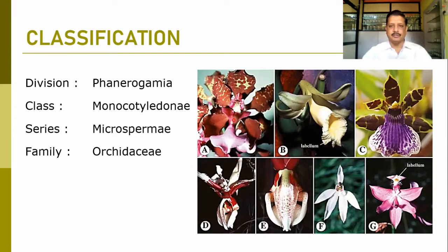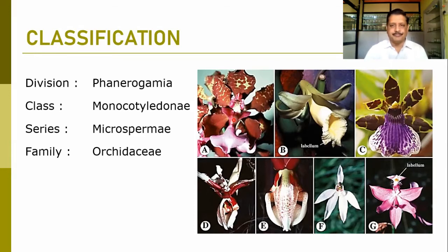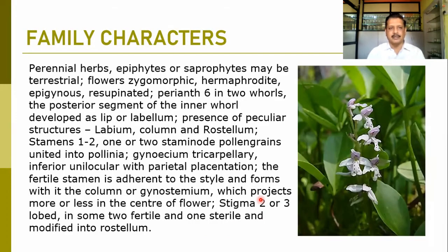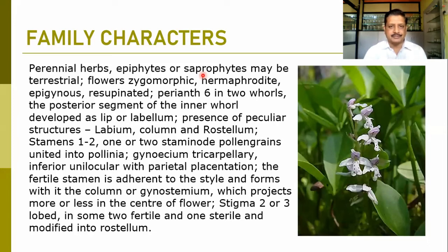All the flowers are attractive but at the same time they are zygomorphic in nature. These are normally the perennial herbs and mostly they are epiphytes or saprophytes. Epiphytes are those living on other plants, and saprophytes are those growing on dead and decayed organisms or plant materials. So these are epiphytes or saprophytes, and maybe terrestrial.